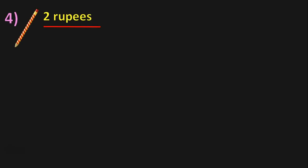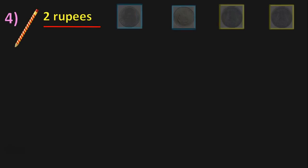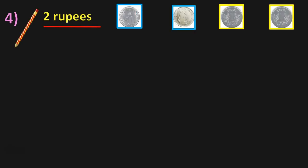Next, we have a pencil which is 2 rupees. We have a 50 paise coin, a 2 rupees coin, a 1 rupee coin, and another 1 rupee coin. How will you make 2 rupees? You can either directly use a 2 rupee coin, or take two 1 rupee coins to make 2 rupees.